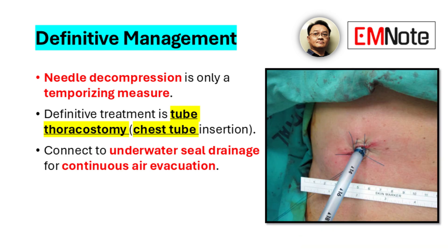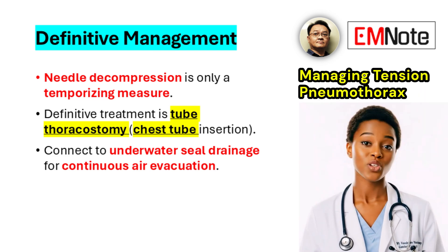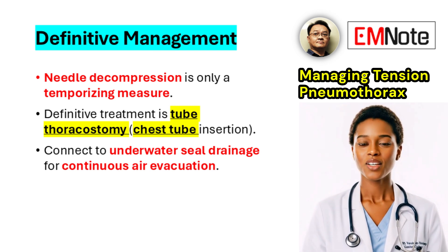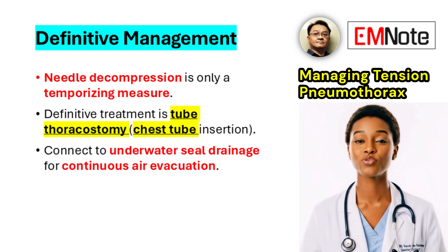This involves performing a tube thoracostomy with connection to an underwater seal drainage system. The chest tube allows for continuous evacuation of air from the pleural space, re-expansion of the lung, and restoration of normal intrathoracic pressures. This step is essential to achieve full physiological stabilization and prevent recurrence of the tension pneumothorax.